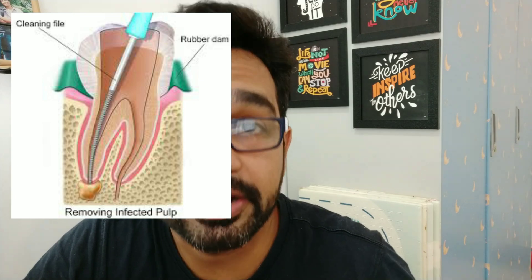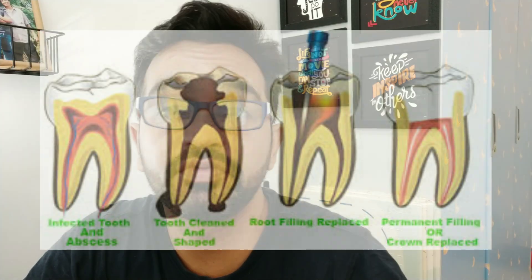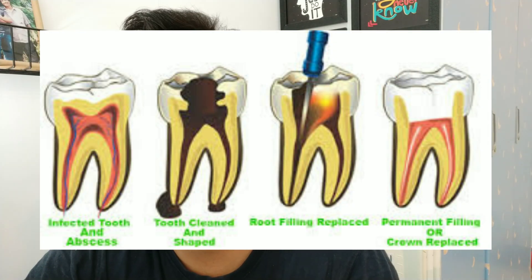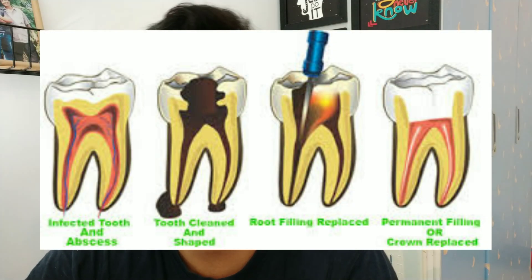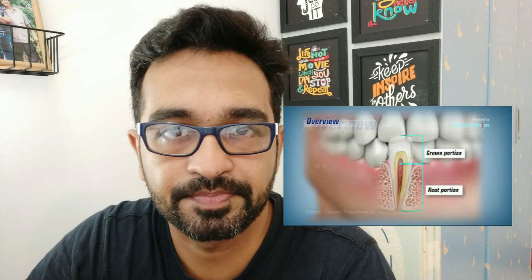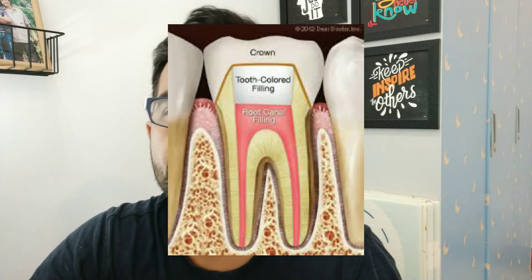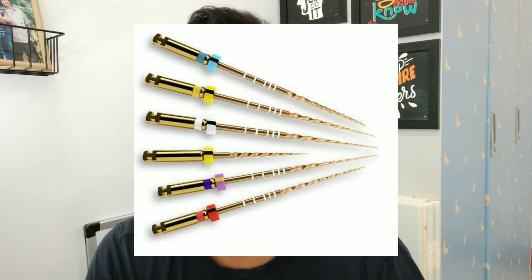The biomechanical preparation (BMP) we do is not enough to remove the entire bacteria, infected cells, and inflammation from the root canal system. There are various file systems being used — different rotary systems, different endo motors — and many people follow different types of irrigation regimes.